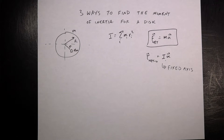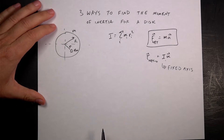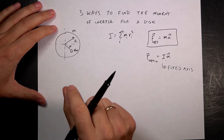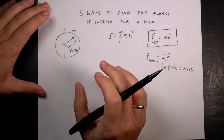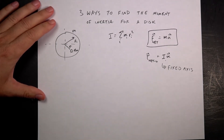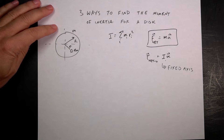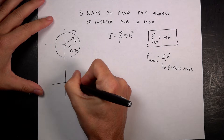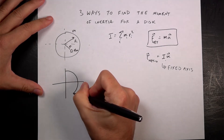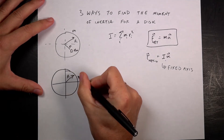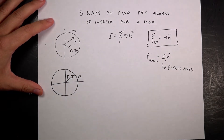I assume you already know about moment of inertia, so I'm going to go over three ways to find the moment of inertia of a disk. This is a solid flat disk — the thickness doesn't matter, it could be a cylinder actually — mass m, radius capital R. The first way is my favorite way, and that's to first find the moment of inertia of a ring. So imagine I have a thin ring of radius r and mass m, and I want to find its moment of inertia.